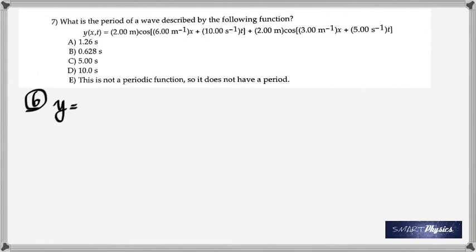Number seven: what's the period of a wave described by this big function? When you look at that function, you see that it is the sum of two cosine terms. And so you need to know what cos A plus cos B is. Now this is what is given. I've written it without the units.